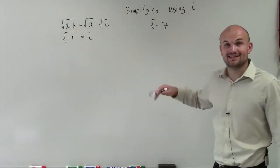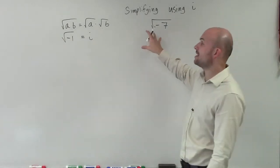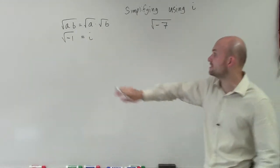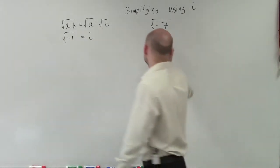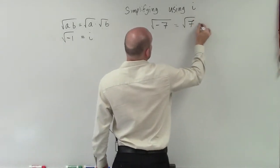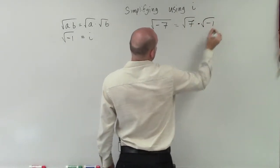So if I want to rewrite this, the first thing I'm going to do is break this up into the product and get out the negative 1 because we know that's going to represent i. So I can rewrite this as the product of square root of 7 times the square root of negative 1.